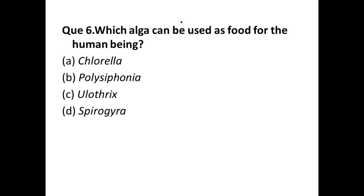Question number six: which alga can be used as food for human beings? Options are: (a) Chlorella, (b) Polysiphonia, (c) Ulothrix, (d) Spirogyra. The correct answer is option (a) Chlorella. Other algae which can be used as food by human beings include wakame, spirulina, agar-agar, and sea moss.